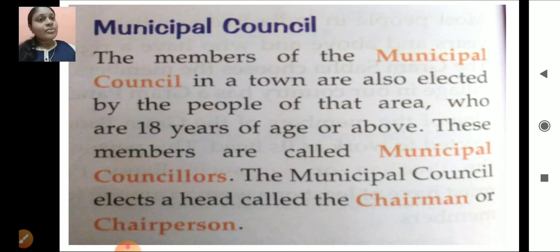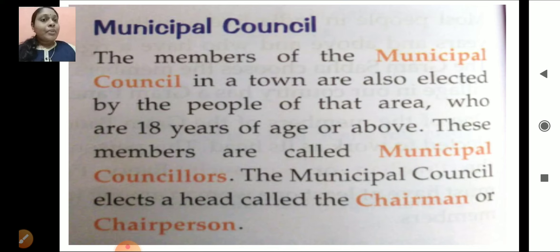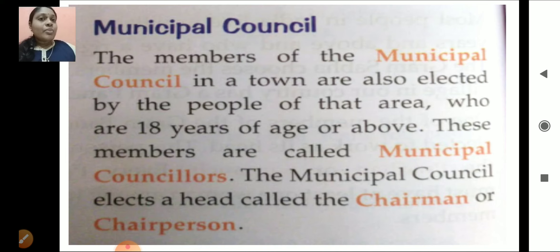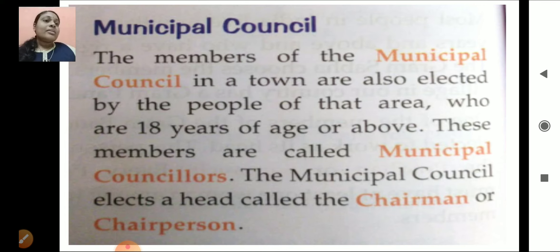Next, we will learn about Municipal Council. In the cities, Municipal Council and Municipal Corporation takes care of building roads, schools and everything. The members of Municipal Council in a town are also elected by the people of that area who are 18 years of age or above — same as the Gram Sabha. These members are called Municipal Councilors. The Municipal Council elects a head called Chairman or Chairperson.